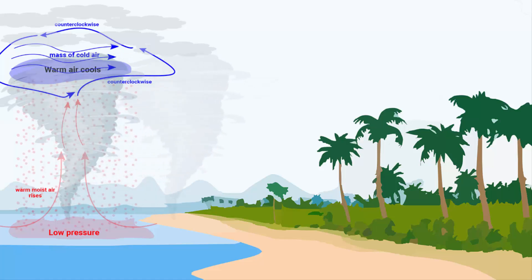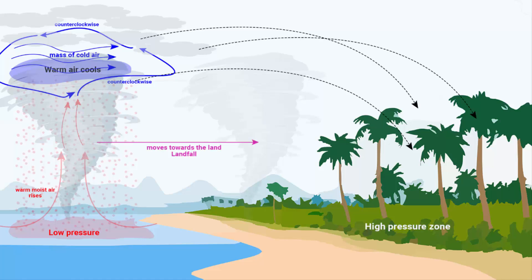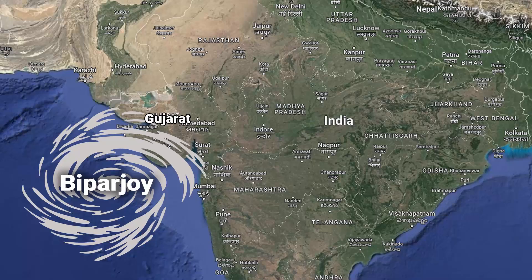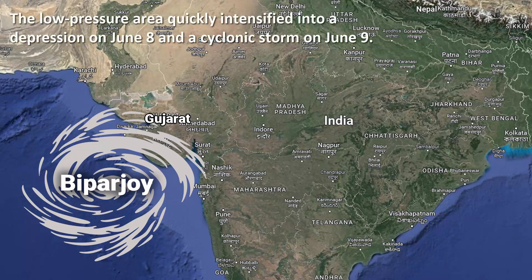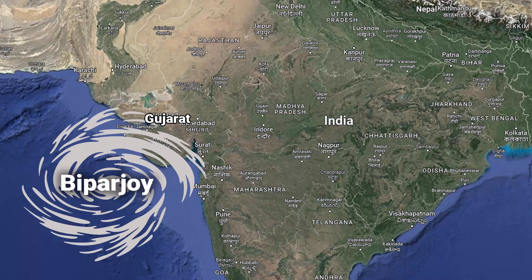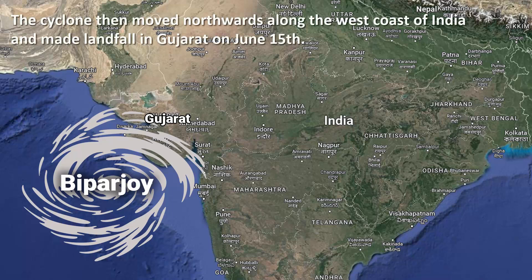Vortex clouds can be dangerous, as they can produce strong winds, heavy rain, and hail. In some cases, they can even lead to tornadoes, and that is what we are seeing with Cyclone Biporjoy. Cyclone Biporjoy originated in the Arabian Sea on 6th June. The low pressure area quickly intensified into a depression on June 8th, and a cyclonic storm on June 9th. The cyclone then moved northwards along the west coast of India and made landfall in Gujarat on June 15th.